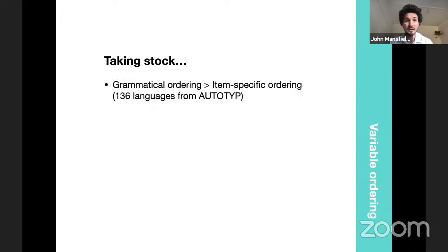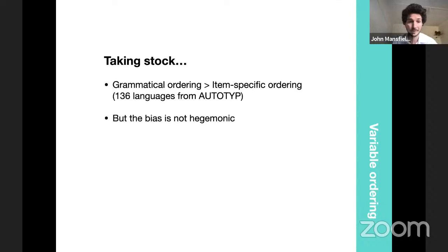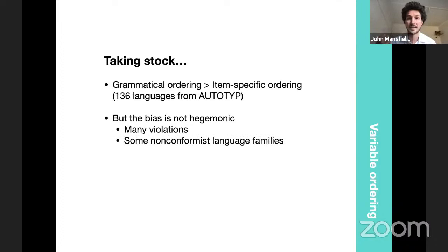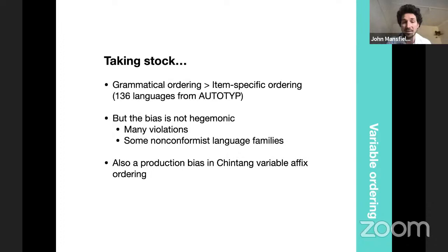Taking stock: in 136 languages from Autotype with fixed ordering, there seems to be a bias towards grammatical category ordering over item-specific ordering, though this bias is not hegemonic — there are many violations. Some language families like Berber, Karanti, and Algonquian don't conform. We also saw a production bias among Sintang speakers when freely ordering prefixes, with biases governed by grammatical category. This convergent evidence towards a general bias towards grammatical category ordering leads to the question of why.